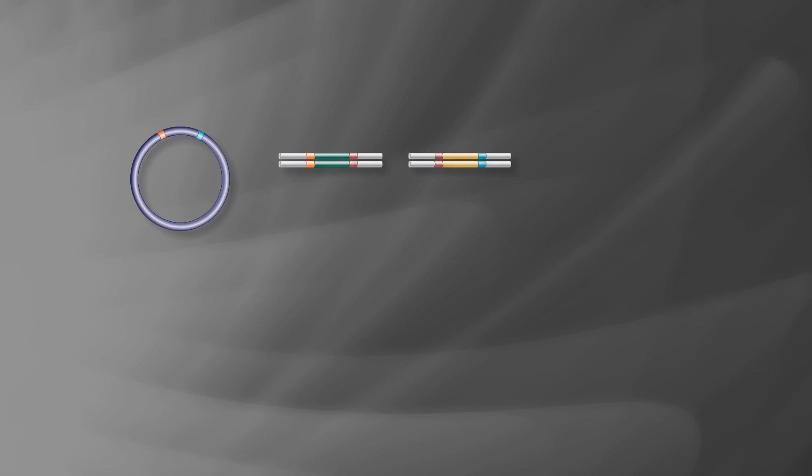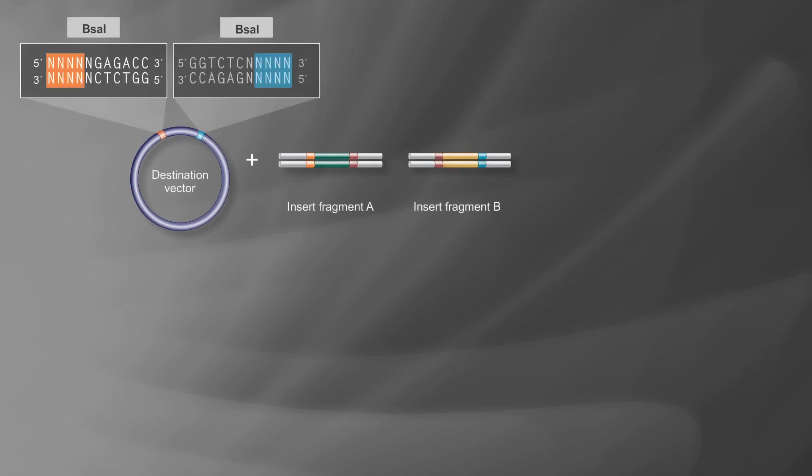In this example, the destination vector is designed to include BSA1 recognition sequences in opposing directions to allow for the assembly of the desired fragments. Using PCR, BSA1 recognition sites are incorporated into the fragments in the proper orientation through primer design.